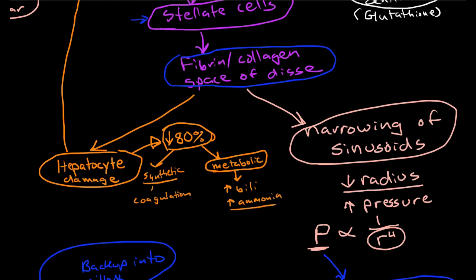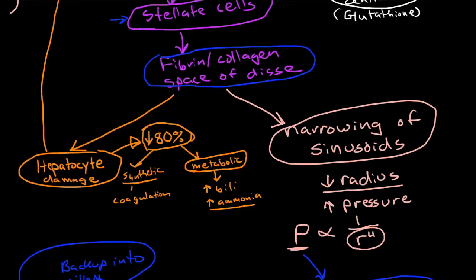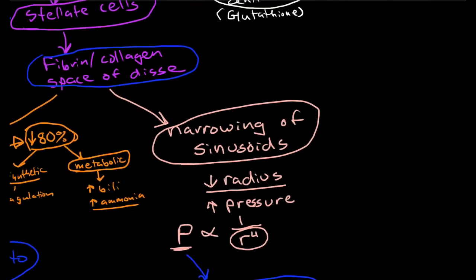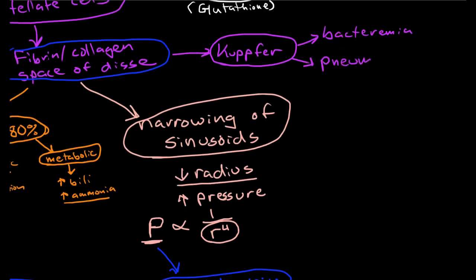And then, I should also mention, this probably isn't mentioned very often with the damage that's done to the space of Disse. But the other cells that are very important that are damaged are the Kupfer cells. So this leaves the body open to enteric bacteremia, pneumonias, and really infections anywhere.